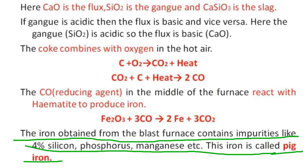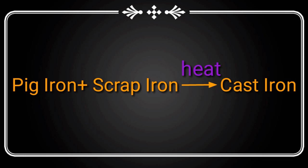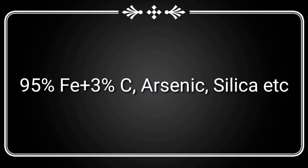The iron produced from the blast furnace is called pig iron. The impurities are about 4% carbon, silicon, phosphorus, and manganese. This pig iron, also called cast iron, contains approximately 3% carbon and 95% iron, with remaining impurities of manganese and silica.